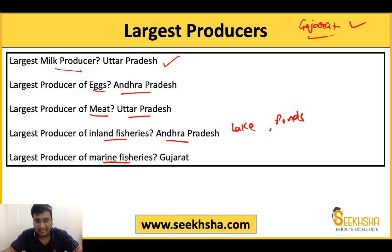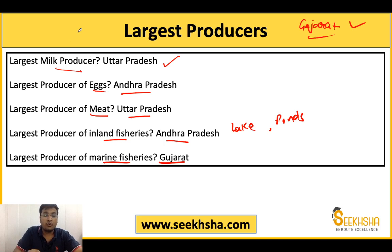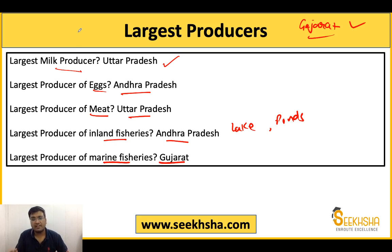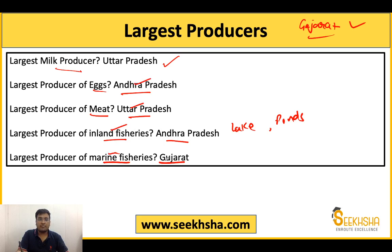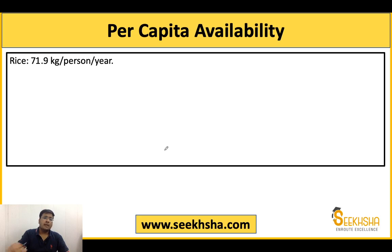For fisheries, in inland fisheries the most important state is Gujarat, and in marine fisheries also Gujarat leads. You will find 2-3 previous year questions on this in the PDF. The largest producer of eggs, meat, and inland fisheries data is covered here — Gujarat is the key state for fisheries.